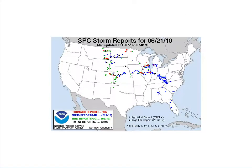We now begin looking at cases, starting with the SPC storm reports. For this case from June 21, 2010, note the numerous severe weather reports across Wisconsin, Illinois, and Iowa, while further west we see numerous reports in Montana and Colorado.